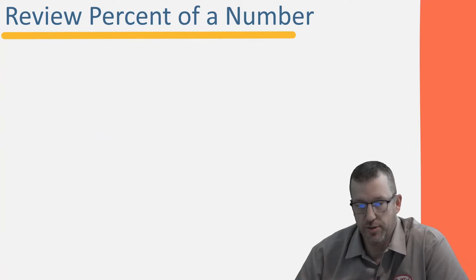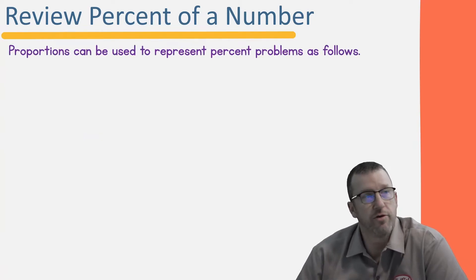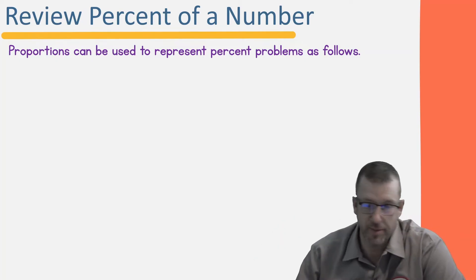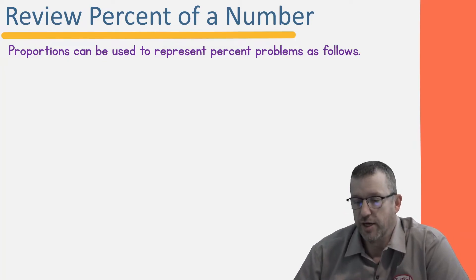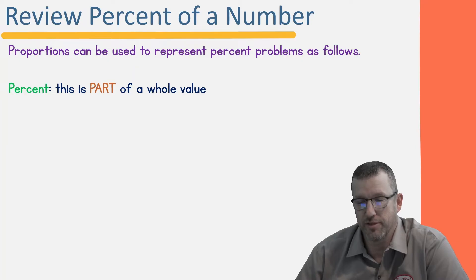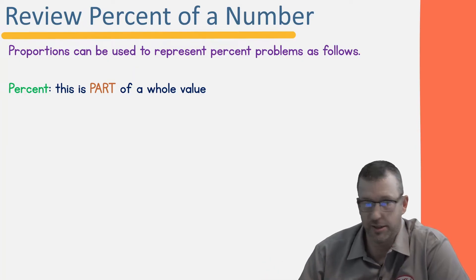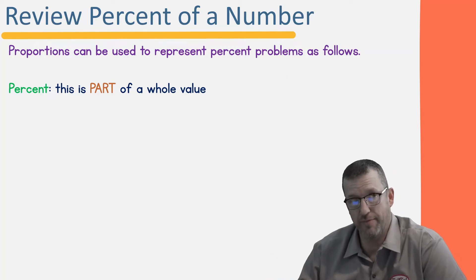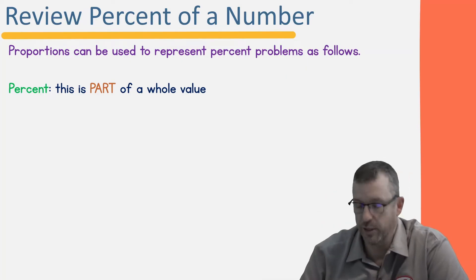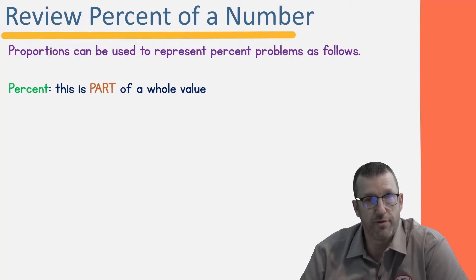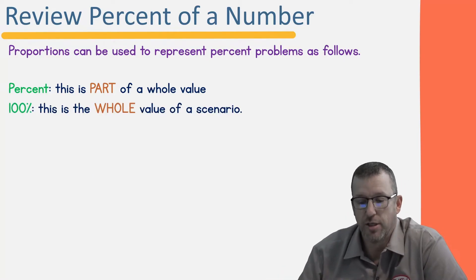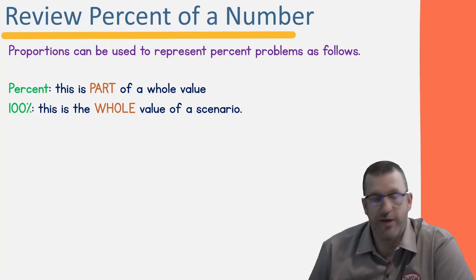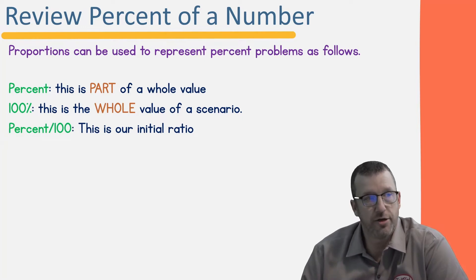To understand how we figure out tax and tip, let's do a quick review of percent of a number. There are videos out there about percent of a number, proportional relationships, and the thingy thang — all very powerful for this lesson. Proportions can be used to represent percent problems: tax is a percent we add on top for the government, and tip is a percent extra we pay to a service person. Percent is part of a whole value, and percents are always out of 100, so the whole value is 100.